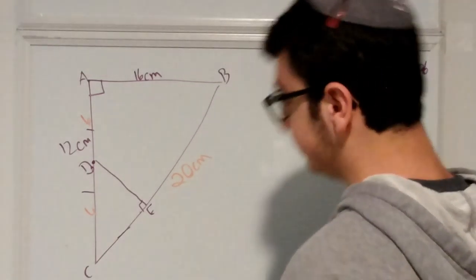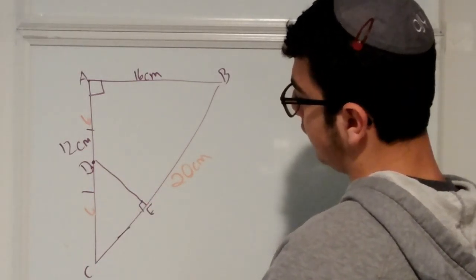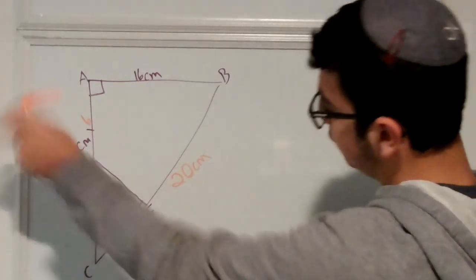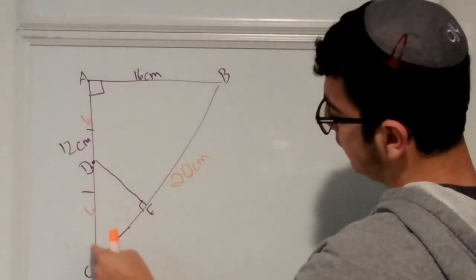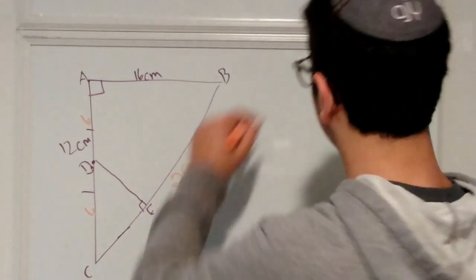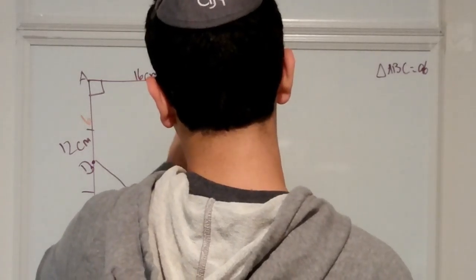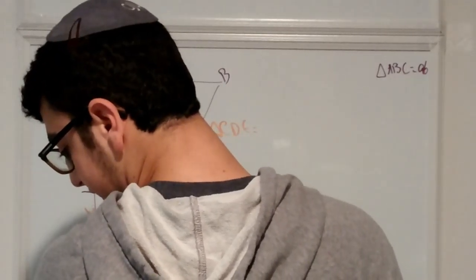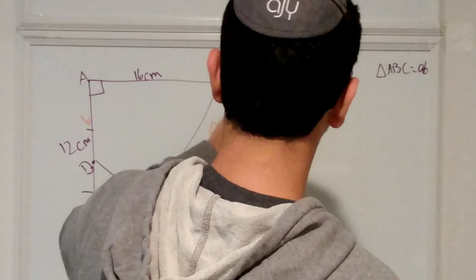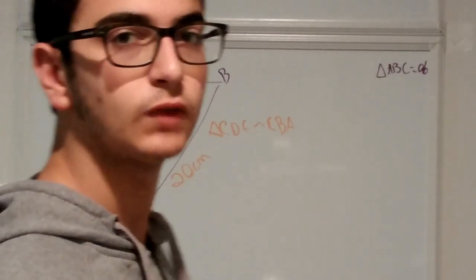Alright, so now we're just going to realize that CED is similar to triangle CAB. You see, if we take this, we flip it around. This is going to be the base right over here. This goes right over there. You can just flip it around, and it all fits. So that means that triangle CDE is similar to CBA.